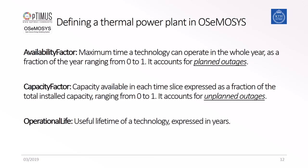As mentioned previously, the availability factor represents the planned outage, such as maintenance of the power plant. The power plant can only operate for the share defined — for example, 95% of the time — and OSeMOSYS will plan for the best timing of the downtime during the year for the remaining 5%. For the capacity factor, this represents the capacity available for energy production per time slice, covering unplanned outages. For the operational lifetime, this is the useful lifetime of the technology expressed in years.